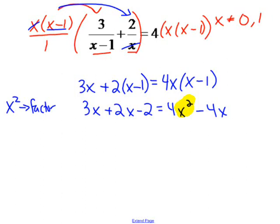So I'm going to subtract 5x from both sides, and I'm going to add 2 to both sides to get this equal to 0. And I have 0 equals 4x squared minus 9x plus 2.